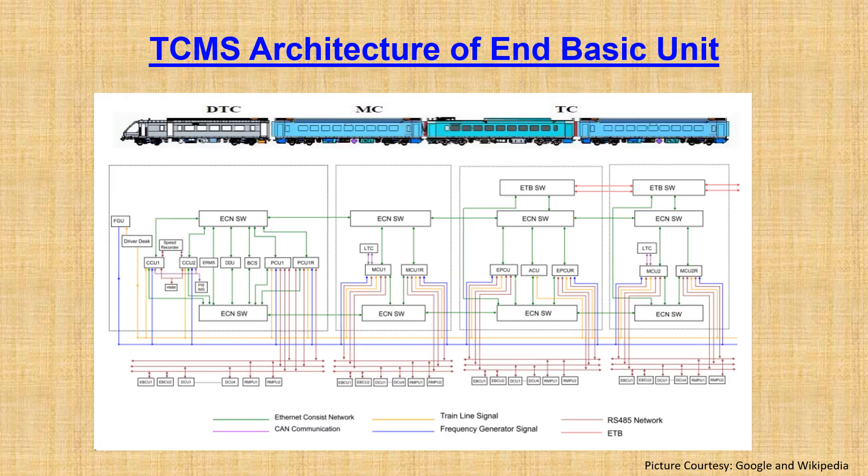In the architecture of end basic unit, it can be seen that subsystems such as driver desk, HMI, PAPIS, speed recorder, brake group mounted package known as RMPUs, and door control system are connected over RS-485 to the CCUs and MCUs, which in turn are connected over ECN. ETB are placed in motor coach number 2 and trailer coach. The train line signals run from the DTC to the other end of the train. Frequency Generator Unit is placed in the DTC car for special rescue driver mode, and CAN communication is inside each motor coach for rescue driver mode at 60 kmph.